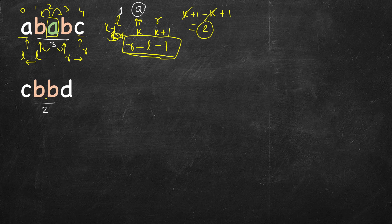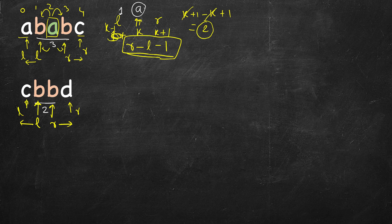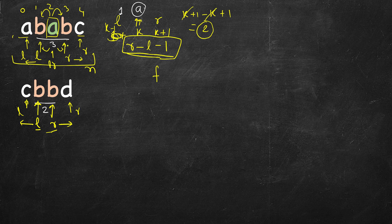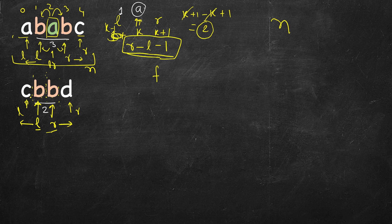For even length palindromes, we start with l at one character and r one place to the right. If they are the same, we follow the same logic: move r right and l left simultaneously. The only difference is that for odd length we start l and r at the same place, while for even length l starts at index i and r at i plus 1. There are n centers for odd-length palindromes and n minus 1 gaps between characters for even-length ones, giving a total of 2n minus 1 possible centers.